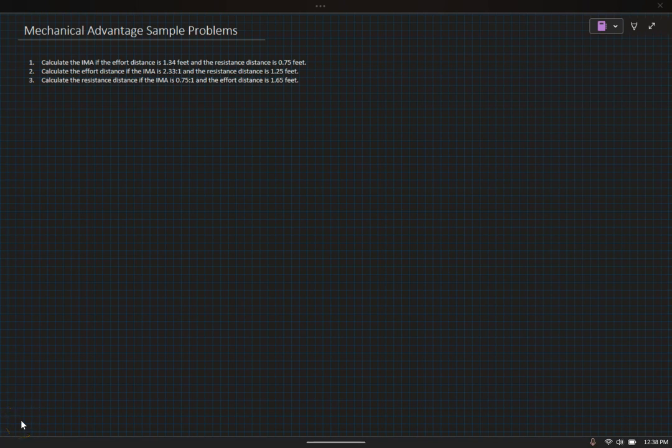Hey guys, today we're going to do some mechanical advantage practice problems. So let's take a look at what we have here. We've got three problems that we're going to work on. The first one says calculate the IMA if the effort distance is 1.34 feet and the resistance distance is 0.75 feet. When we solve problems it's really important that we do so consistently. You should be solving problems the exact same way every single time.